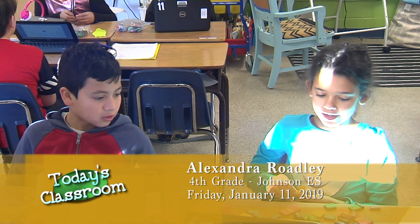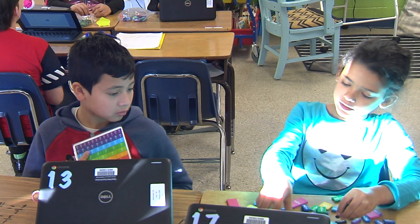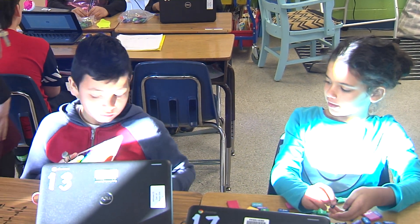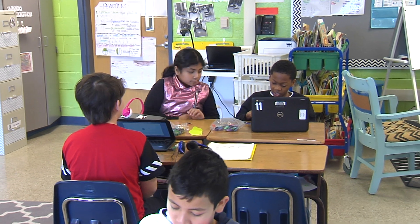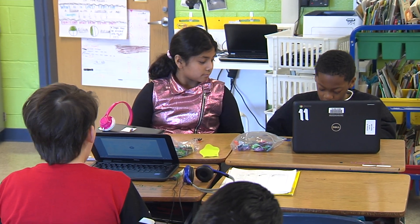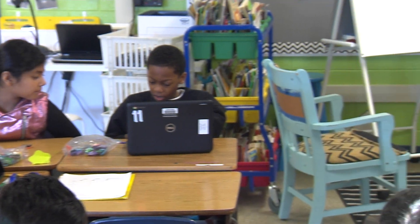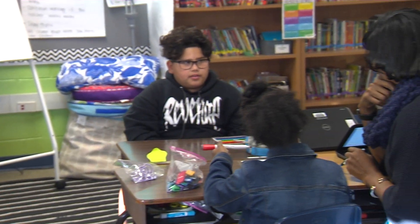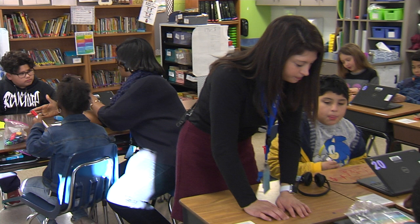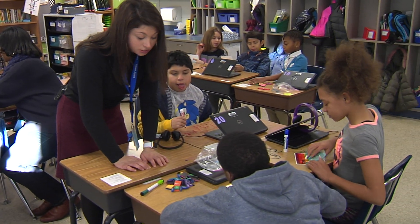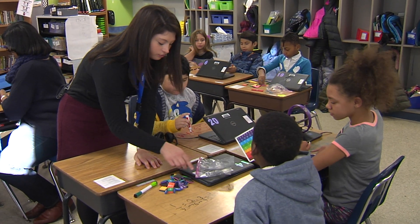One-third equals four-twelfths because you can line them up — four times more. I love the turn and talk and how you guys are confident in one another's work. I like how Alexa showed you how to do it. You did the skip counting method. Did you prove it with your fraction bars? Maybe Alexa can help you prove it with your fraction bars — can you two work together on that?